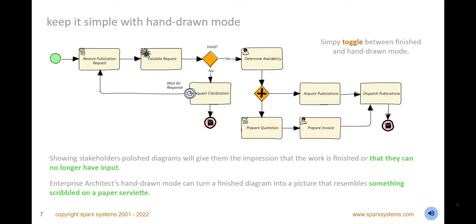Keep your diagrams simple with hand-drawn mode and engage stakeholders to continue contributing to a model's evolution. Toggle between highly resolved diagrams and a sketched mode that gives the appearance you scribbled the details on the back of a serviette. Apply other tools such as filters, layers, and diagram labels and legends to add meaning and appeal, and apply a whiteboard or custom diagram style to change the presentation to engage business and technical stakeholders.